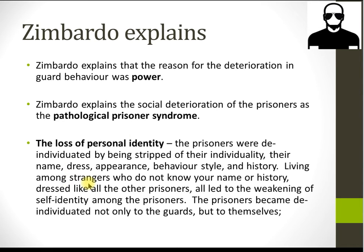Living amongst strangers who don't know your name or history, dressed like all the other prisoners, the prisoners became de-individuated. De-individuation is his key concept. This has been offered as an explanation for why so few Jews in Nazi Germany revolted, even when they knew their likely fate. There were far more prisoners than guards at places like Auschwitz — why didn't they rise up? Because they had been psychologically weakened through de-individuation: a number tattooed on them, all dressed the same, heads shaved.